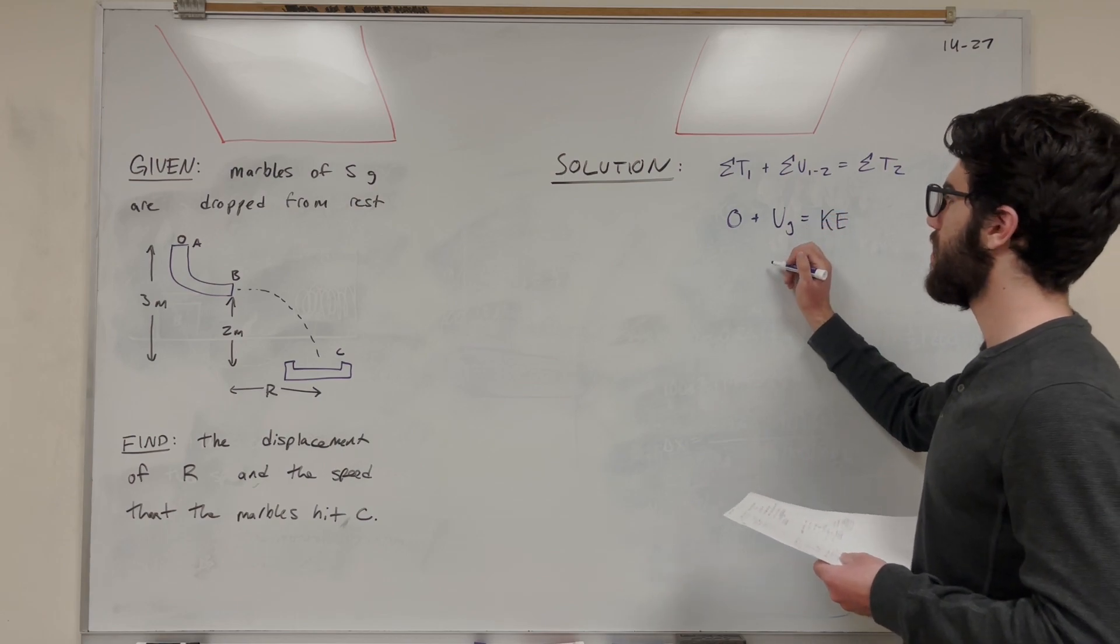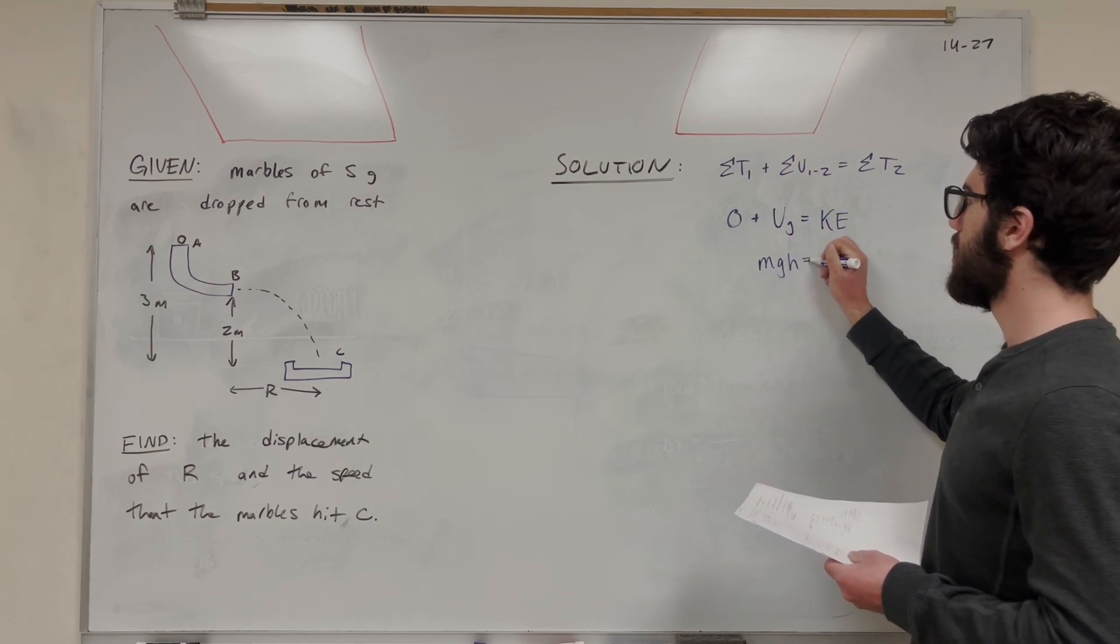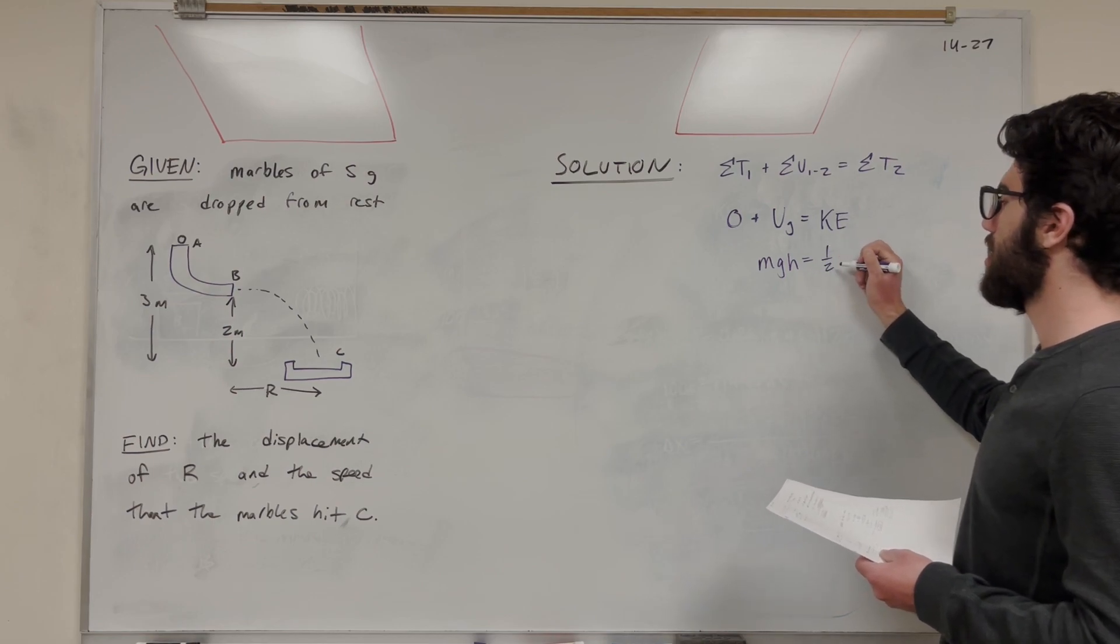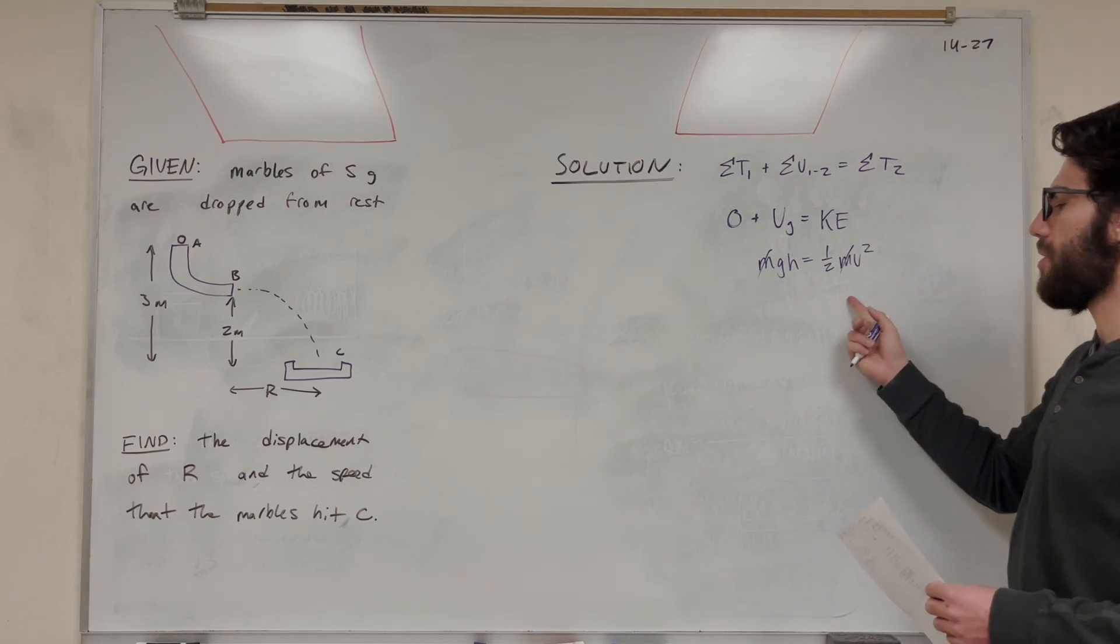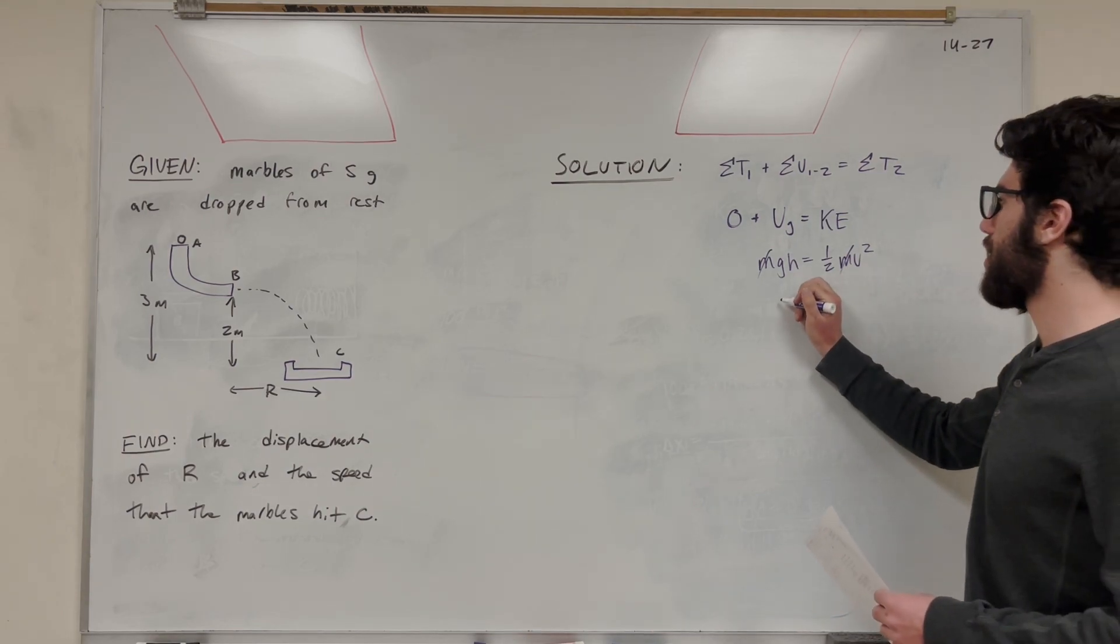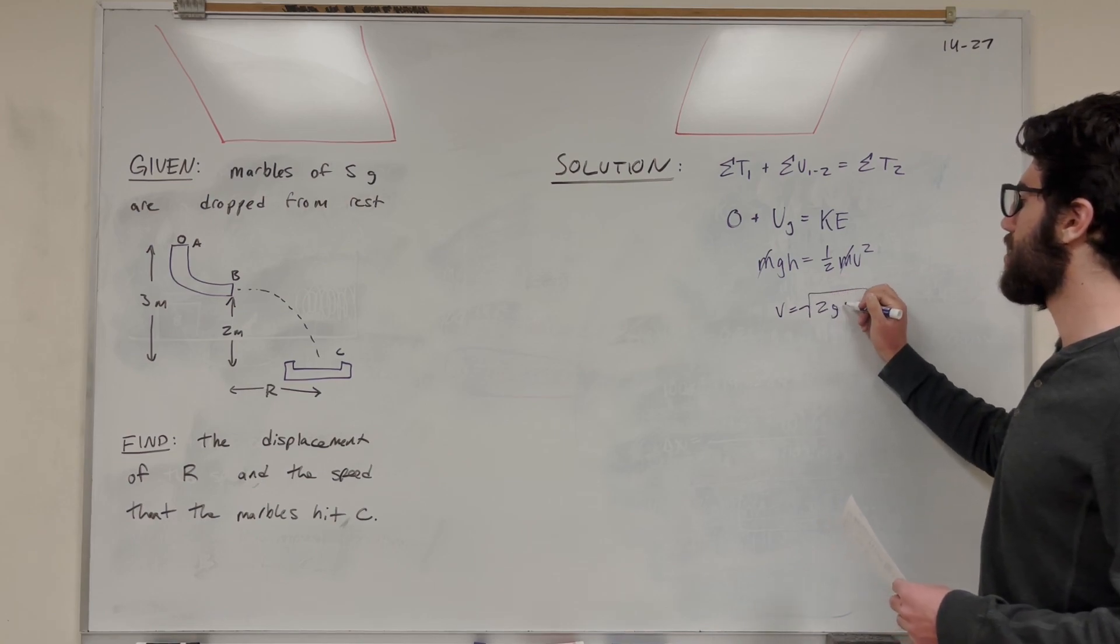So let's expand this. Gravitational potential energy is mass times gravity times height, and kinetic energy is ½ mass times velocity squared. Now we're finding velocity, so we're going to multiply that 2 over, and you're going to get that velocity is equal to the square root of 2 times gravitational gravity times height.